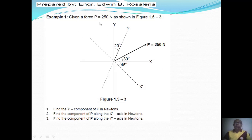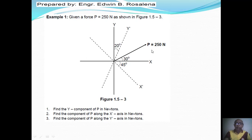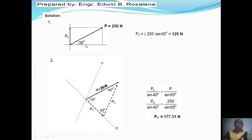Example: Given a force P equal to 250 newtons, at 30 degrees with respect to X. Find: (1) the Y component of P, (2) the component of P along the X prime axis, and (3) the component of P along the Y prime axis. For number one, the component of P along the Y axis is PY equal to 250 sine of 30, which gives 125 newtons.